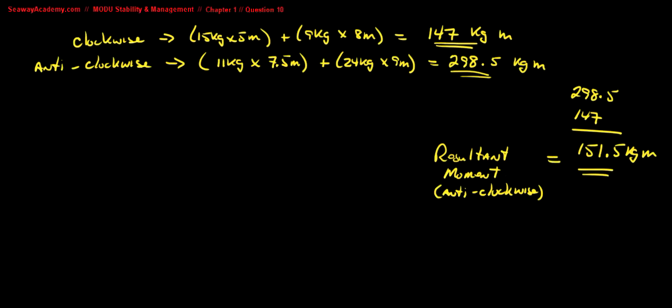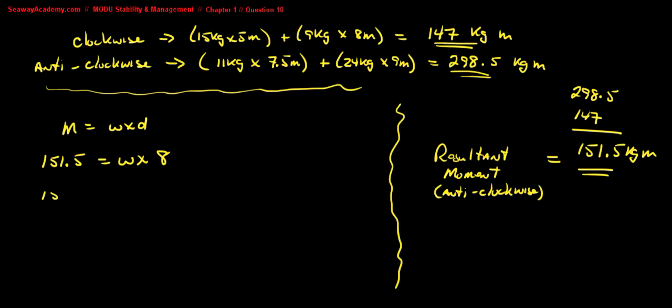So now we have to calculate the weight in order to gain equilibrium. Our resultant moment we calculate as being 151.5, and this must equal the weight times the distance. They told us the distance would be 8 meters.